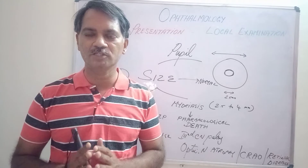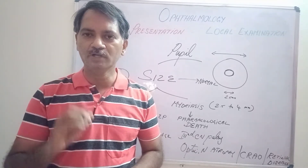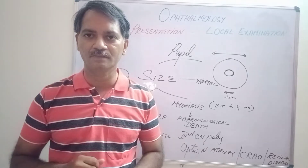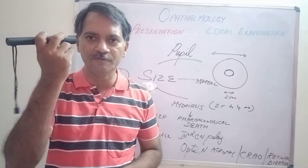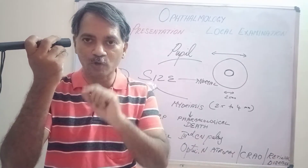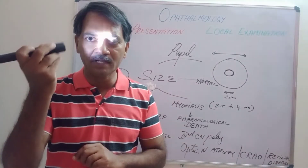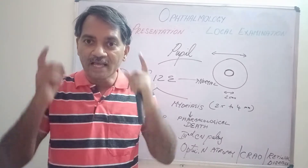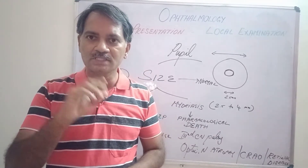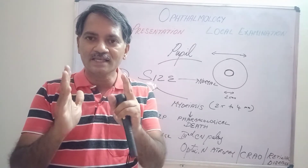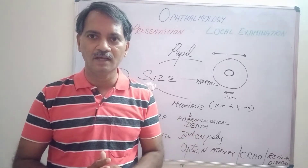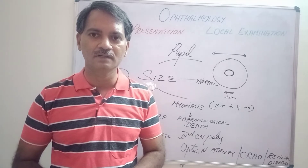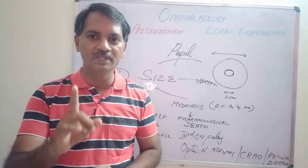The most important thing in the examination of the pupil is determining its size. The examiner stands in front of the patient, keeps the light ready in front of that particular eye, watches keenly, and slowly switches on the light. Initially the pupil has a certain size, and within a few microseconds it becomes smaller. The examiner must note the size of the pupil before constriction and compare it with the size of the cornea — if it is one-fourth of the corneal size, it is approximately 3 mm in diameter.